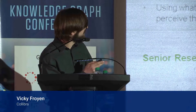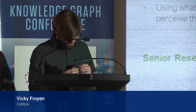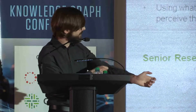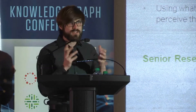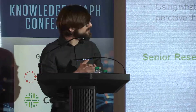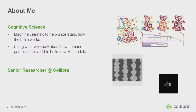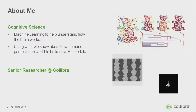A little bit about me. I have a totally different background than maybe a lot of you. I've only been dabbling into knowledge graphs for the past two months. I have a background in cognitive science, where I worked on machine learning to help understand how visual perception works, how the brain works, how we perceive objects in the world, how we do depth perception. On the other hand, I also used what we know about neuroscience to build new machine learning models. Representations of knowledge, or visual representations, are not really unfamiliar to me.